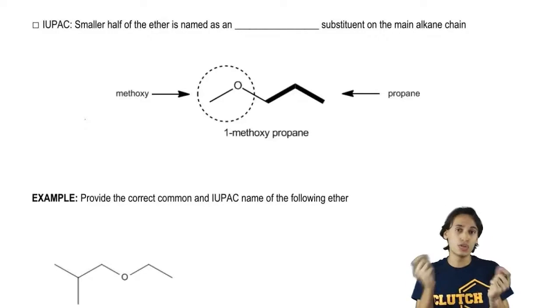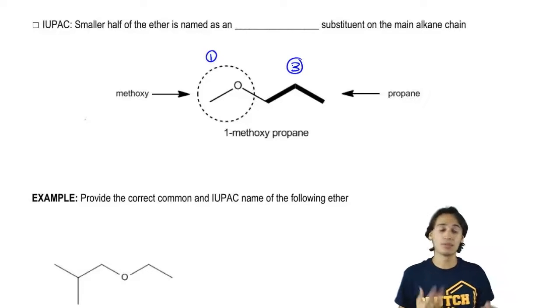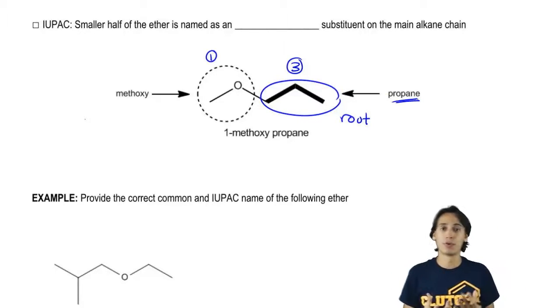So what I would say is which of my R groups is the biggest one? In this case I have a one carbon side and a three carbon side. So obviously I'm going to use my three carbon side to be my root. And in this case my root is going to be propane. So I know that I'm dealing with propane.